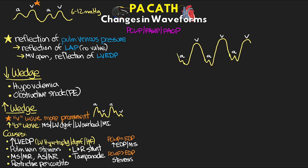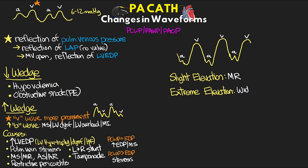Another important finding with wedge pressure is elevated V-waves. If slightly elevated, this can result from mitral regurgitation. However, if we have really extreme, especially sudden V-wave elevation following an MI, this could indicate wide open mitral regurgitation. Looking at the waveform, we essentially see a loss of the X descent — so much blood is coming back into the left atrium from that strong left ventricular contraction through the wide open mitral valve.